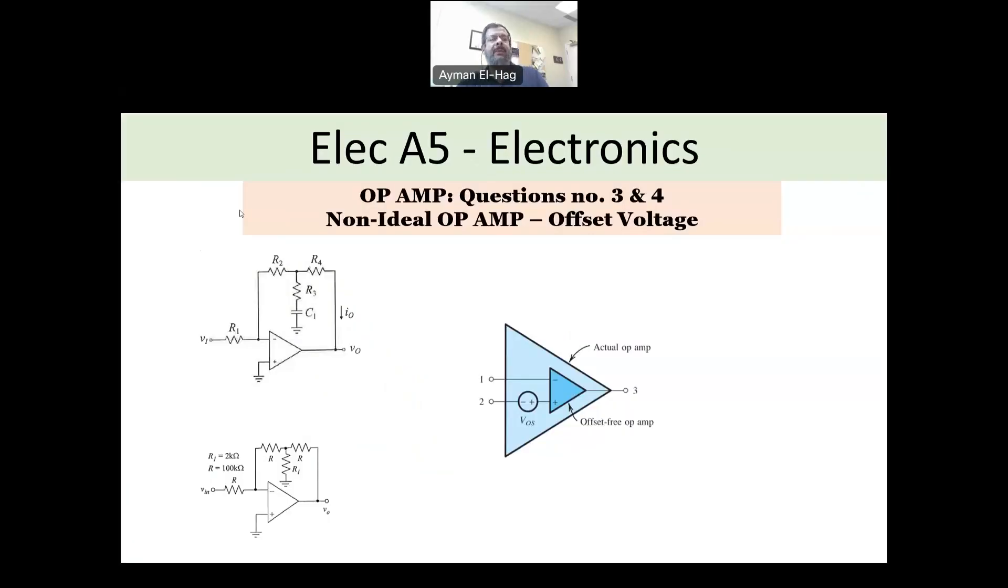Hey everyone, and welcome back to the series of solving different questions to prepare those who want to take the electrical A5 electronics exam to pass the requirements for the P-Eng in Ontario and other provinces in Canada. In the previous two examples, I talked about Op Amp, and specifically I dealt with ideal operational amplifiers. But also, you might be asked to consider one of three different non-ideal characteristics in the operational amplifier. Today, we will cover the first one, which is the offset voltage.